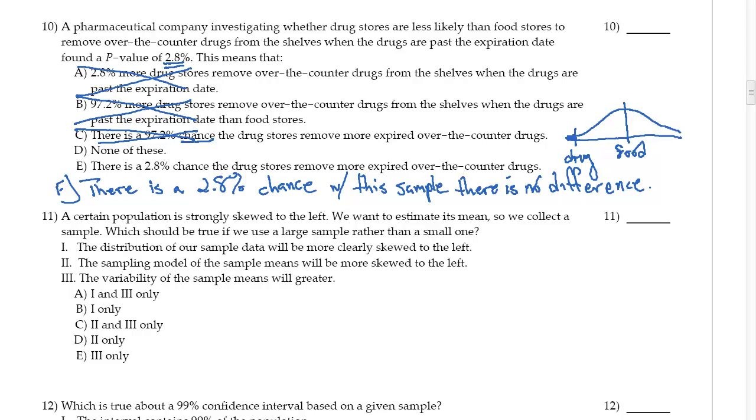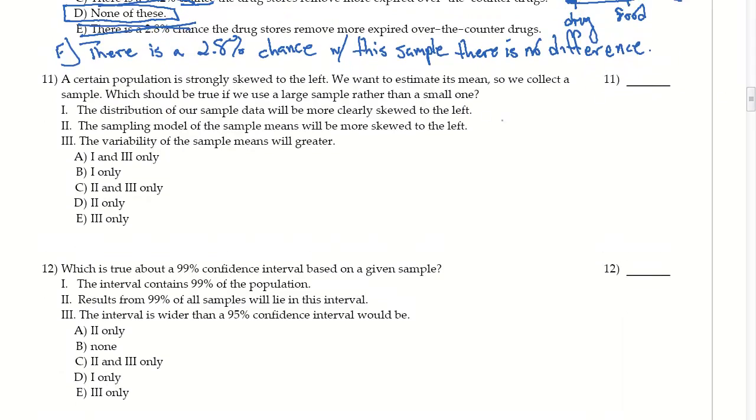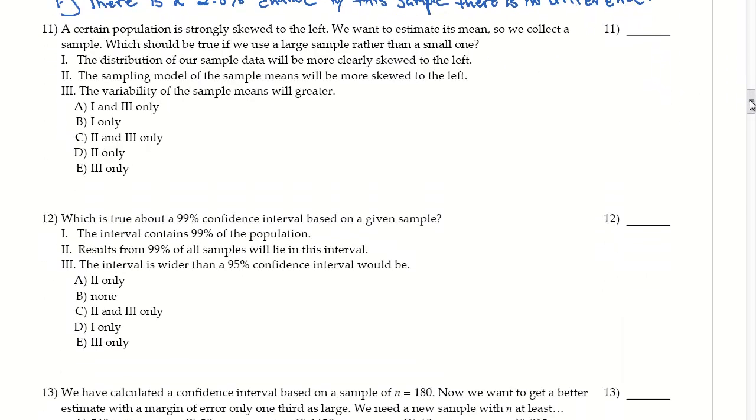So this would be like F, and this would be what we were looking for. Now there's a 2.8% chance that drug stores remove more expired... well, no, right? We kind of figure that drug stores are removing more expired drugs, but it's not a 2.8% chance that they are. It's a 2.8% chance that there's no difference. So it can't be this one, and so that leaves us with D, none of these. So there's D. Let's scroll down just a little bit more.